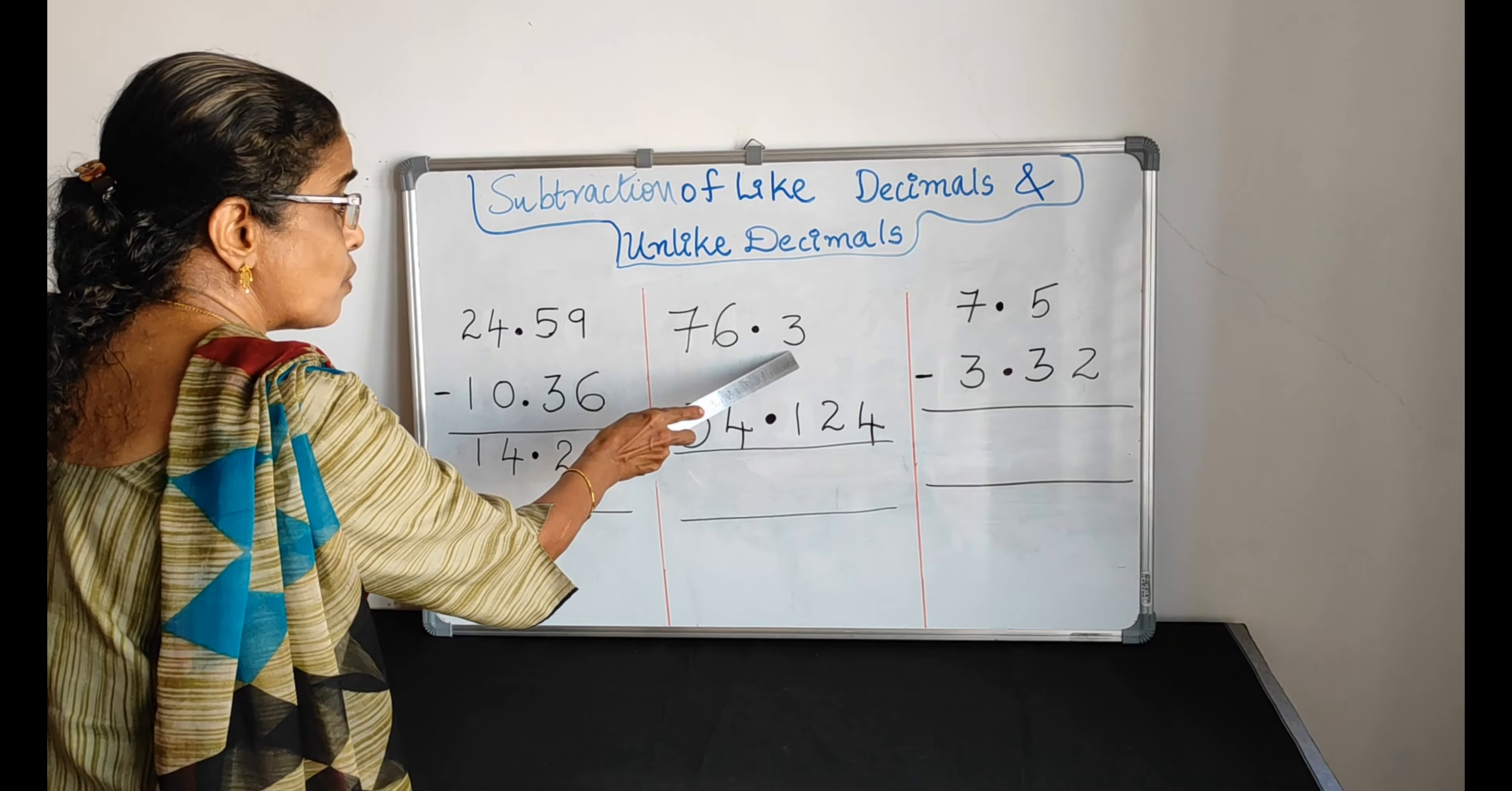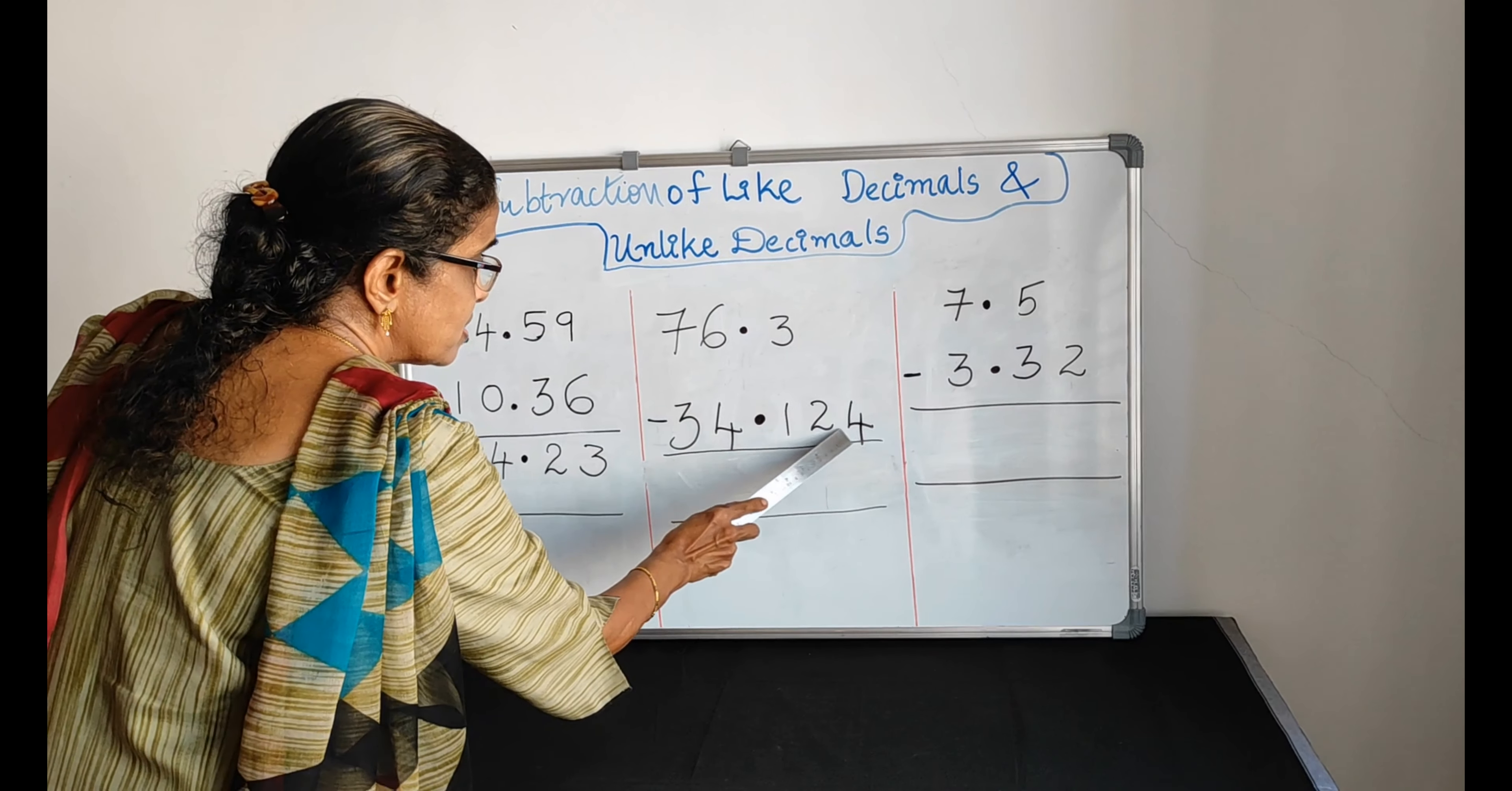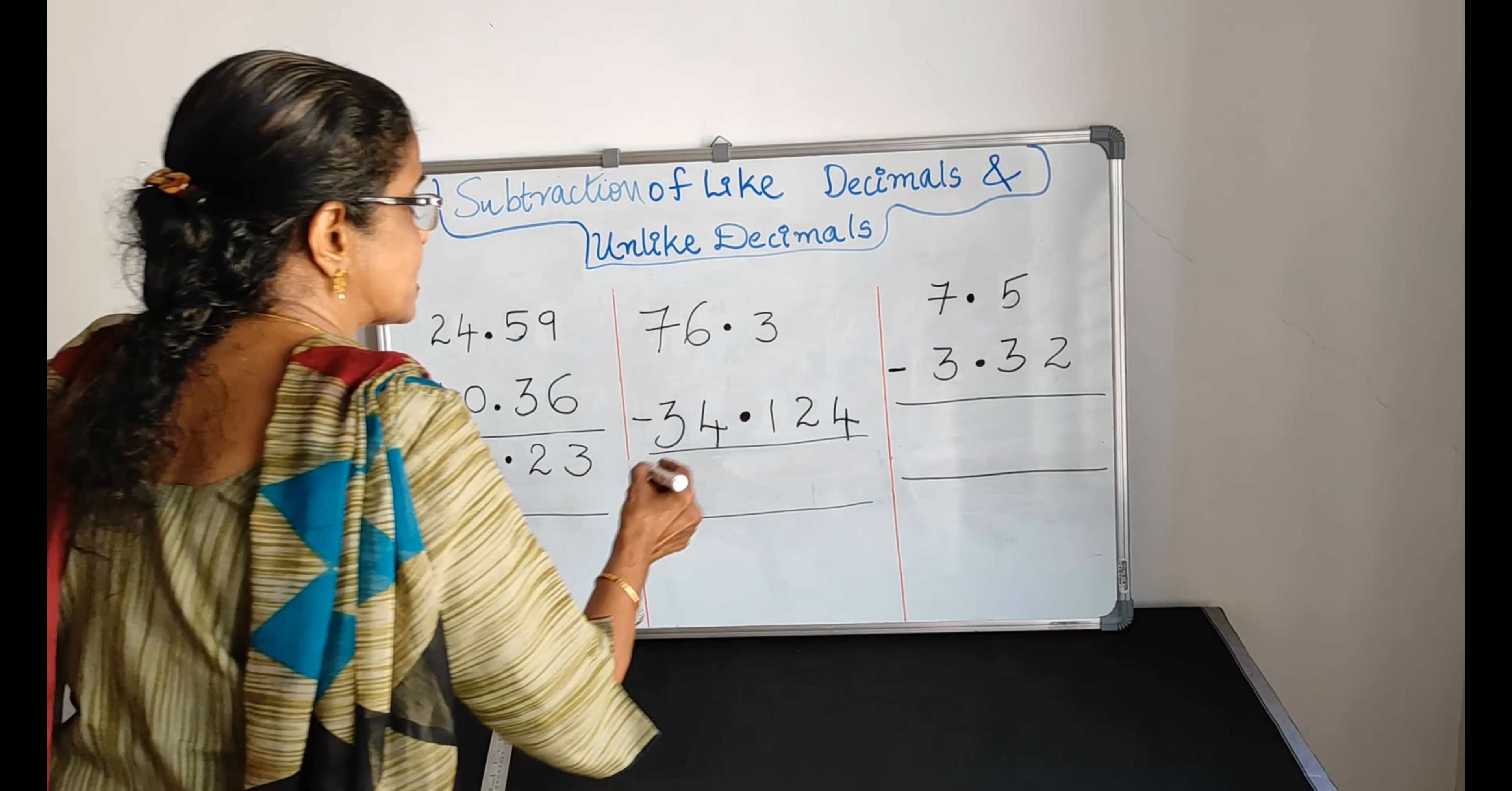5 minus 3, 2. 4 minus 0, 4. 2 minus 1, 1. So the answer is 14.23.